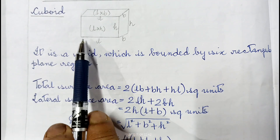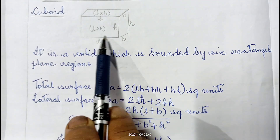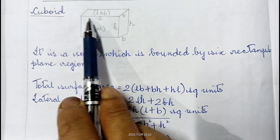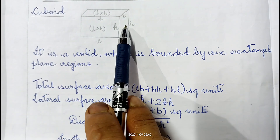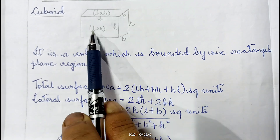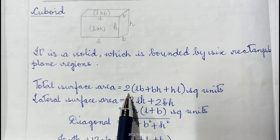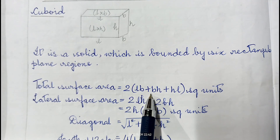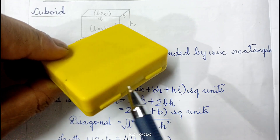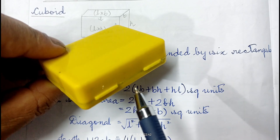In this figure, this is length, this is breadth, this is height. Area of the front face is L×H, the upper face is L×B, and the side face is B×H. Each appears twice, giving total surface area as 2(LB + BH + HL). When we consider only the sides — excluding the top and base — we use the lateral surface area.